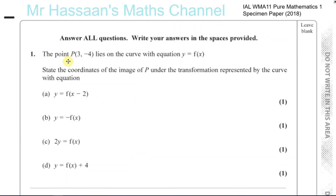Question one is about transformations. We're told there's a point P at (3, -4) which lies on the curve with equation y = f(x). We're not told the equation of the curve, but we are asked to state the coordinates of the image of point P after the transformation represented by each given equation. For part a, we have y = f(x-2). Whenever you have a transformation, this is the original function and this is what it's changed to. The change is taking place inside the function.